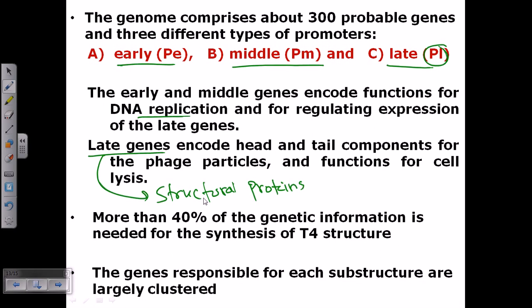More than 40 percent of the genetic information is needed for the synthesis of T4 structure, otherwise it cannot be produced. So this is the basic arrangement of different structural components.